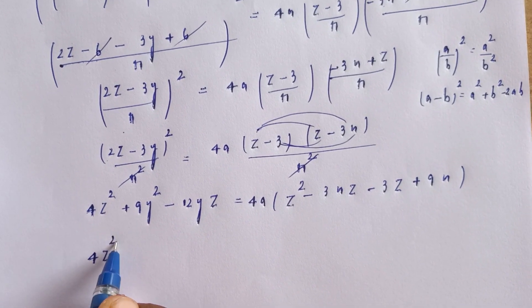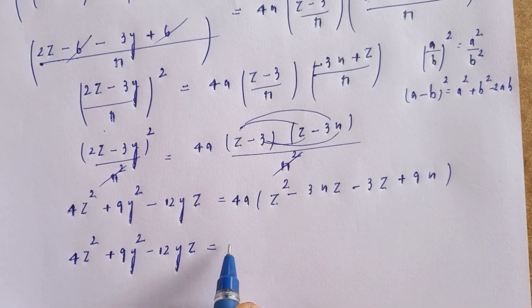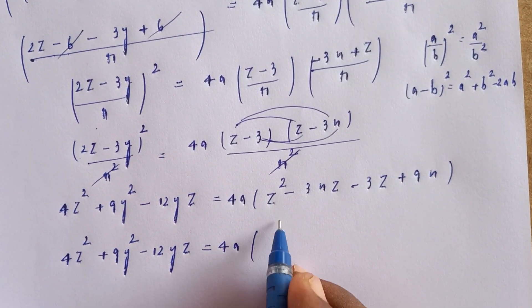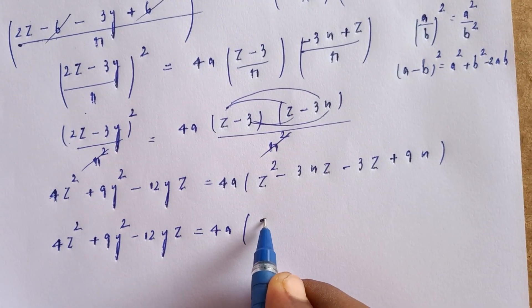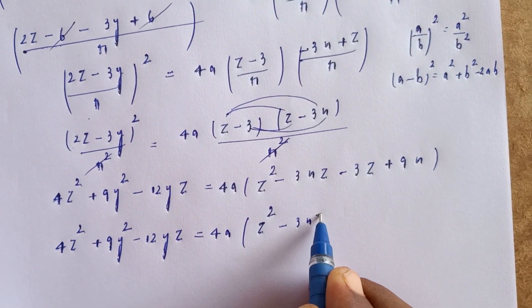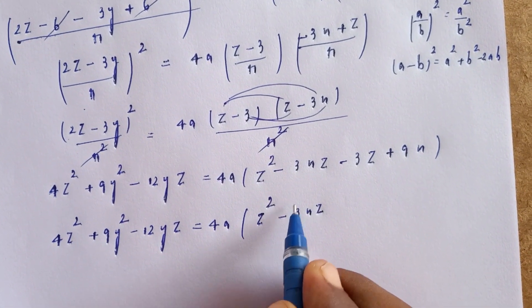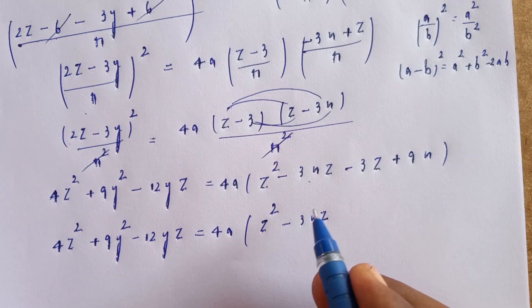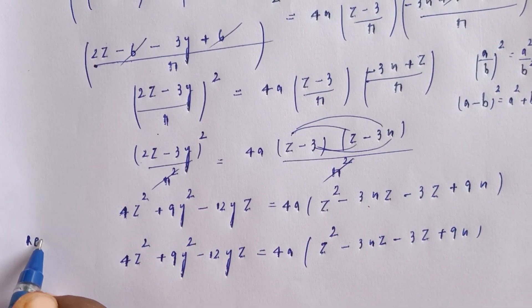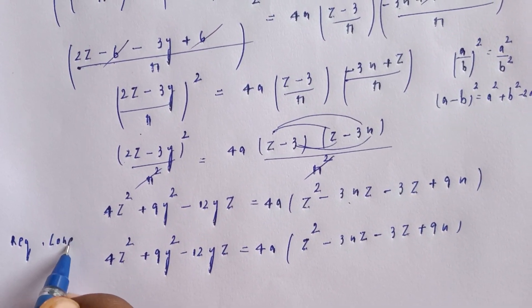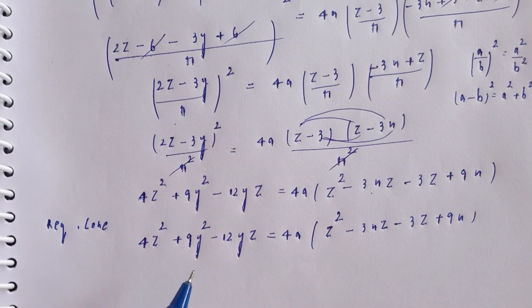Therefore: 4z² + 9y² - 12yz = 4a(z² - 3z·x - 3z + 9x). This is the required equation of the cone.